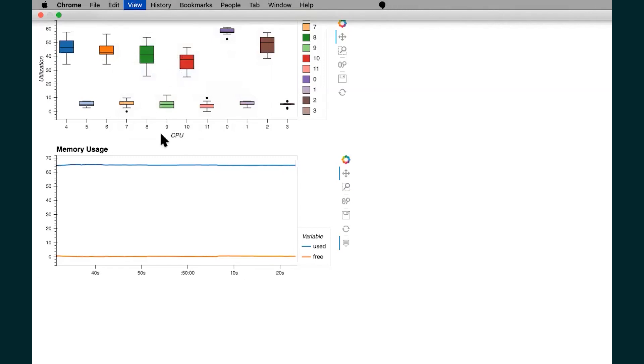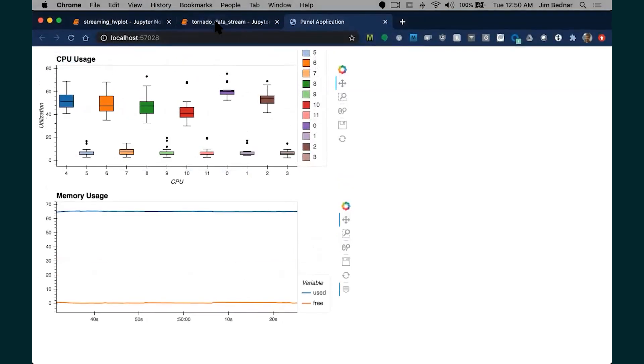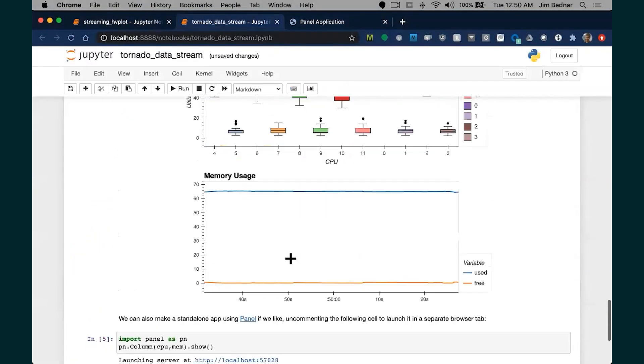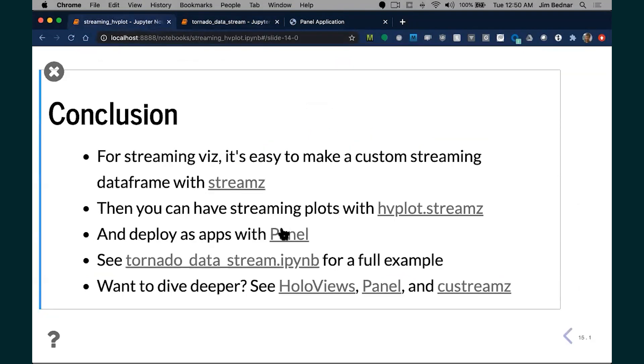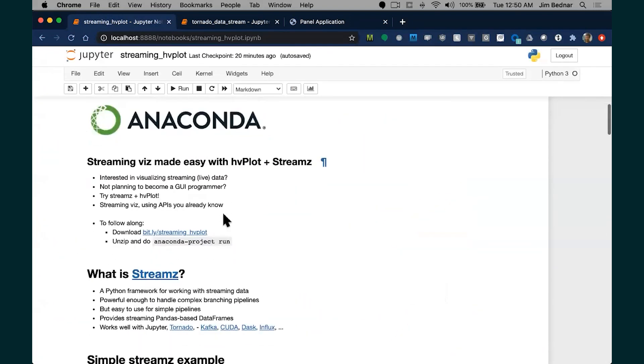So let's exit and put that link up there again. The link to download it is the one I had at the very beginning. Just download that, unpack that, run Anaconda Project, and you can reproduce all this yourself. Thank you.